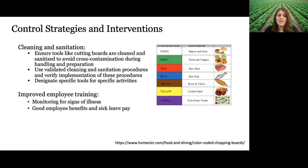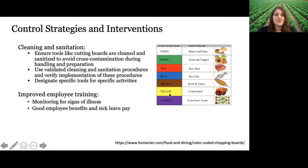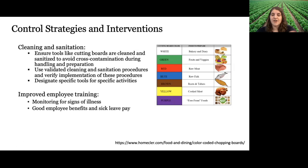Control strategies and interventions for retail cross-contamination: cleaning and sanitation of tools and equipment is a big one, using validated procedures and verifying their implementation. Segregating specific tools through color-coding of equipment ensures you're not using the same tools to butcher chicken and cut fresh produce. Improved employee training is also important — making sure employees wear gloves when handling fresh produce, monitoring for signs of illness to ensure no sick employees come to work, and providing good employee benefits and sick leave pay to help with that.